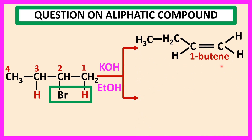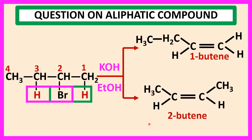Again, when the red color hydrogen atom attached to carbon-3 and the bromine atom are removed, 2-butene is formed. Here the question arises, which butene is produced in more amount. According to Zaitsev's rule, that alkene will predominate which has the most alkyl substituents on the double bond.